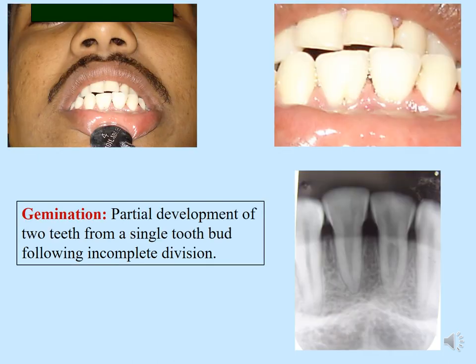Starting with gemination. Here is a case of a patient who came to a dental clinic for a routine checkup. On examination, the mandibular arch appeared to have an extra tooth, and the central incisors appeared to show macrodontia. However, on taking a radiograph, it was noted that there is partial development of two teeth from a single tooth bud — basically incomplete division. This is an example of gemination, where clinically macrodontia is present due to partial development of two teeth from a single tooth bud.